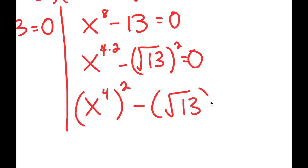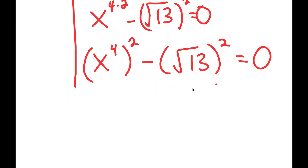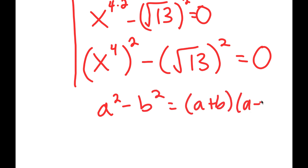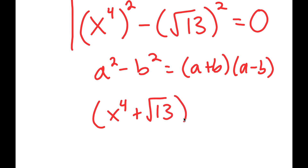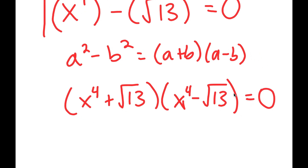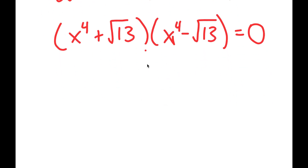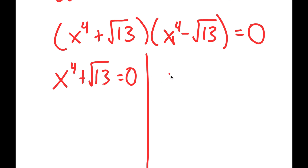Now I have x to the power of 4 squared minus the square root of 13 squared equals 0. Applying difference of squares again — a squared minus b squared equals a plus b times a minus b — this becomes x to the power of 4 plus the square root of 13 times x to the power of 4 minus the square root of 13 equals 0. This gives me two more equations: x to the power of 4 plus the square root of 13 equals 0, and x to the power of 4 minus the square root of 13 equals 0.